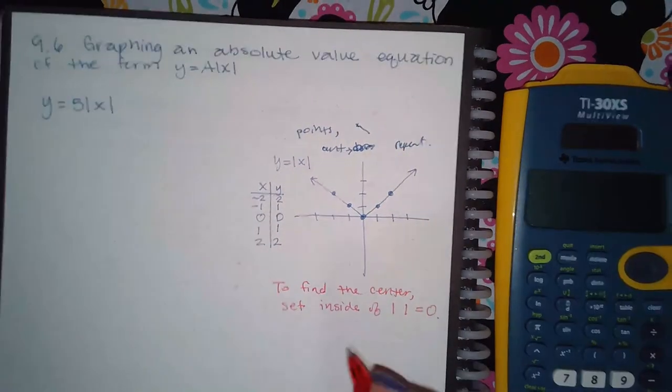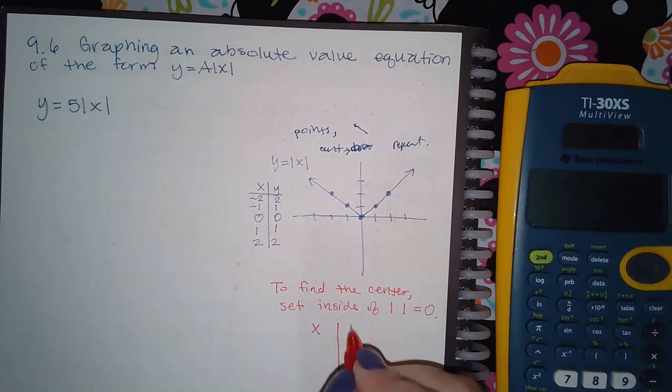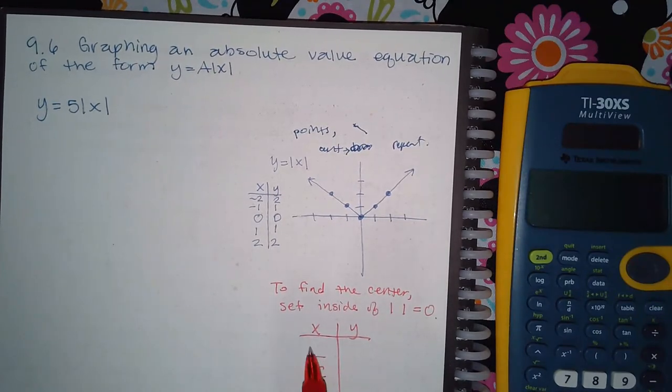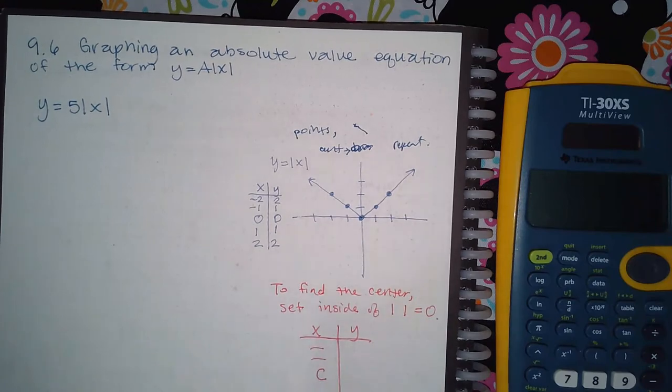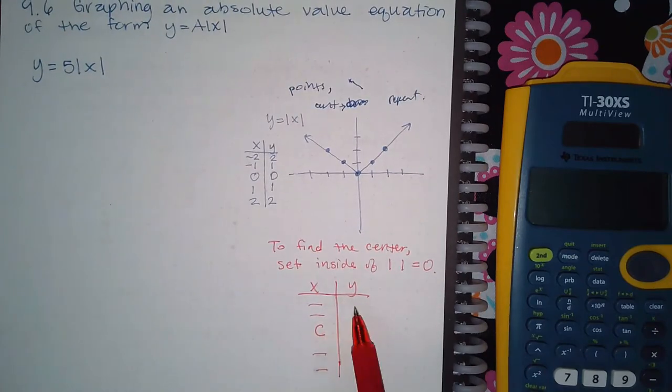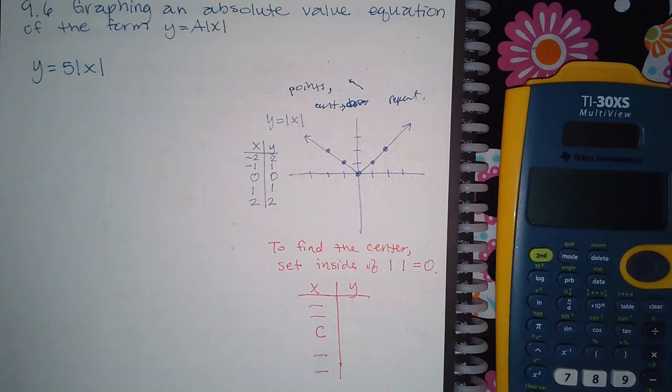And then to get the points, once you know what this center value is, you just need two points to the left of that center and then two x values to the right of that center. And in order to find the y values, you just plug those numbers into whatever equation that you're given.